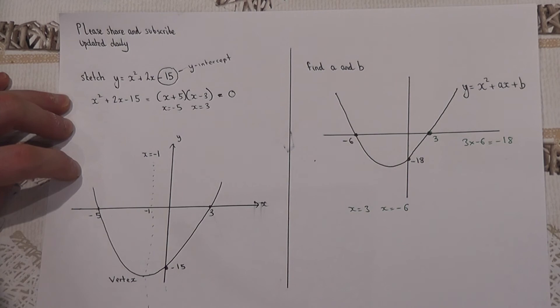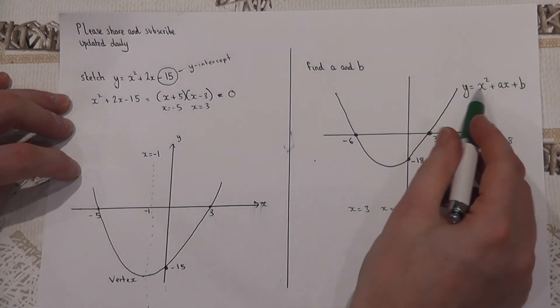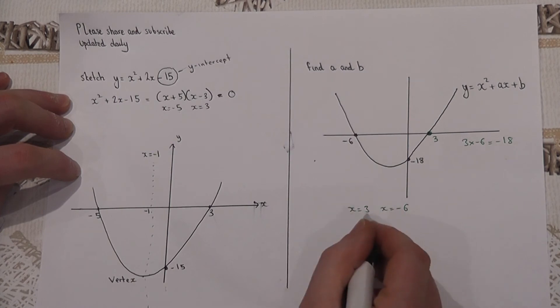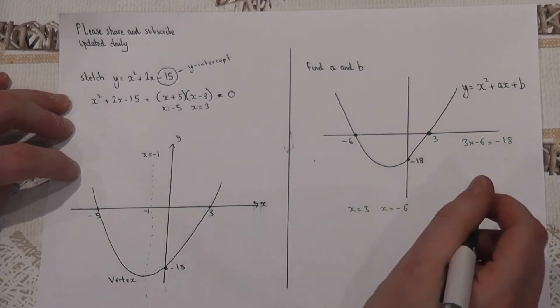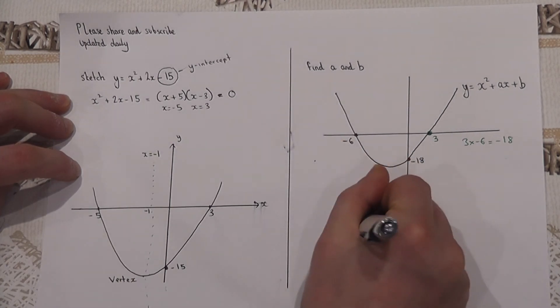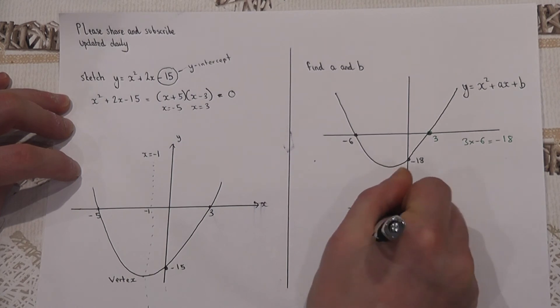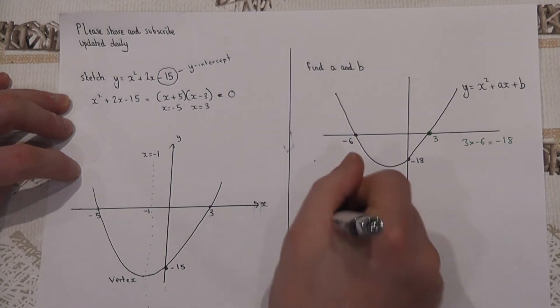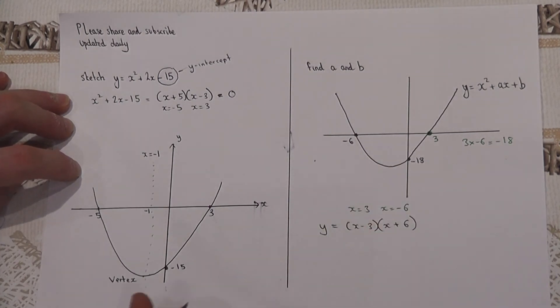So if I know the roots for a simple quadratic I can therefore write down the factors. If three is a root then x minus three is a factor. If minus six is a root then x plus six is a factor. So this is my equation.